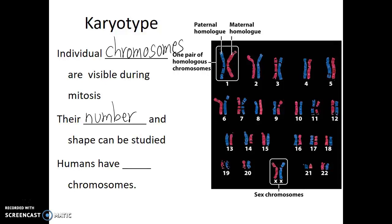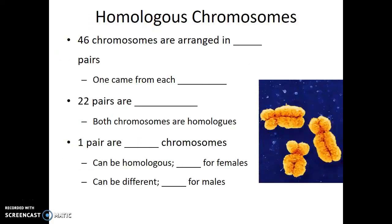Here we see the karyotype of a human female. In this karyotype, some chromosomes are colored in blue and some in pink — those are the chromosomes from this individual's father and mother respectively. Each pair of chromosomes shown consists of two X-shaped chromosomes: one duplicated chromosome from the mother and one from the father. Humans have a total of 46 chromosomes — 23 from our mother and 23 from our father — arranged into 23 pairs, with one chromosome of each pair coming from each parent.